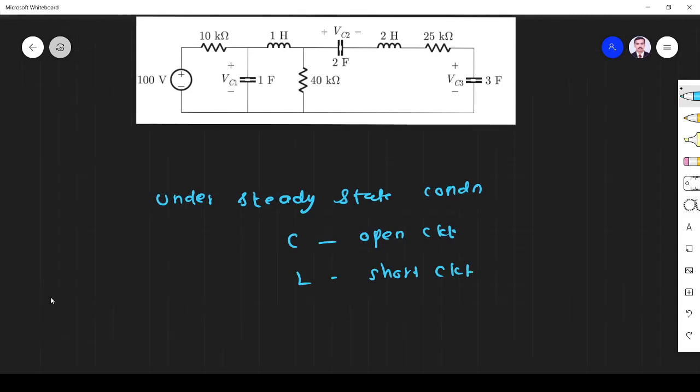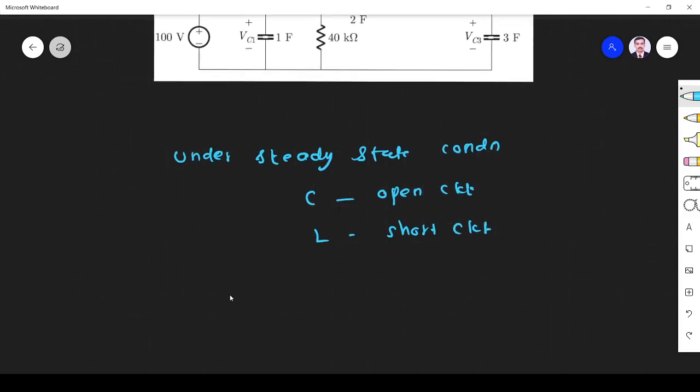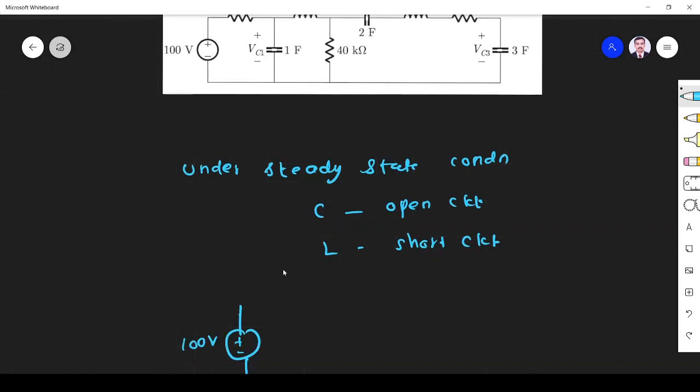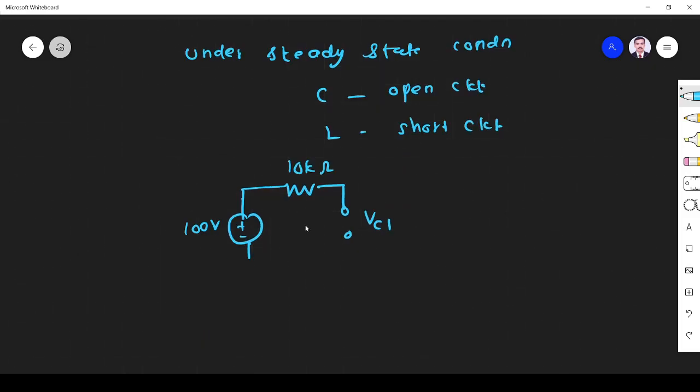So I redraw this circuit. What is that is under steady state condition? It is 100 volt. Now 10 kilo ohm resistor will be as it is. Capacitor is open circuit, so it will be open. So this is VC1.